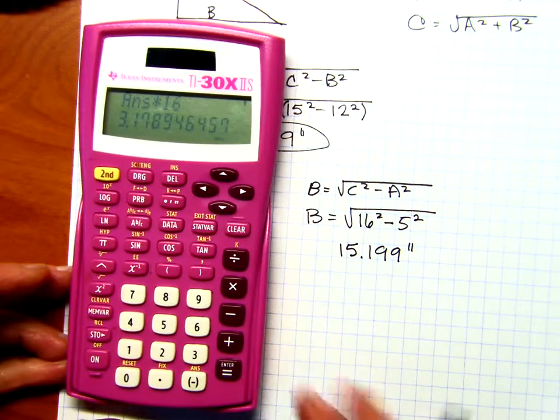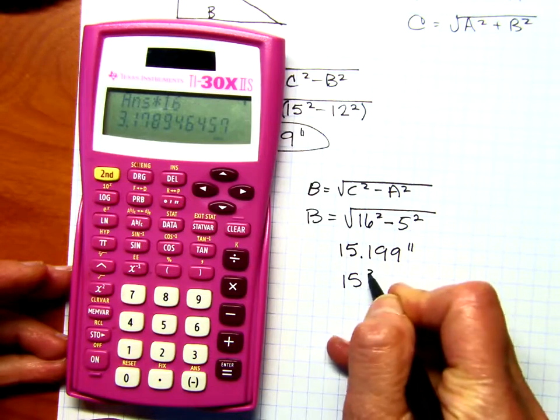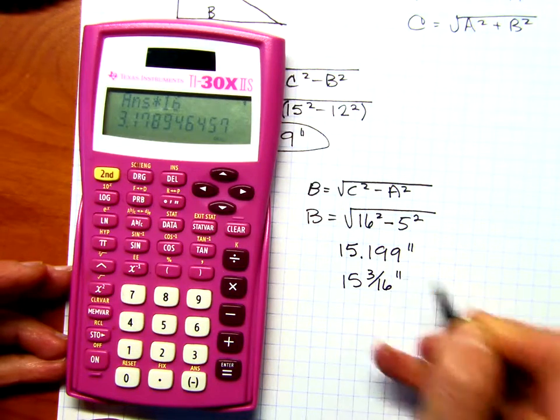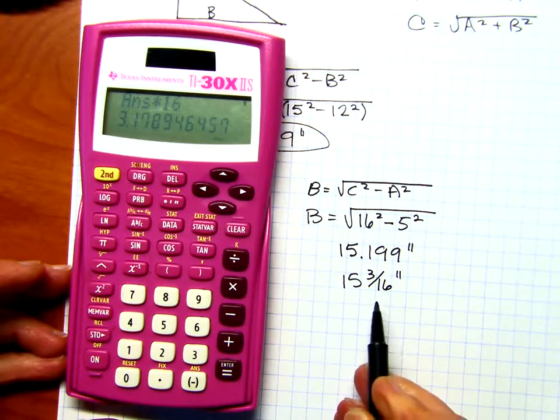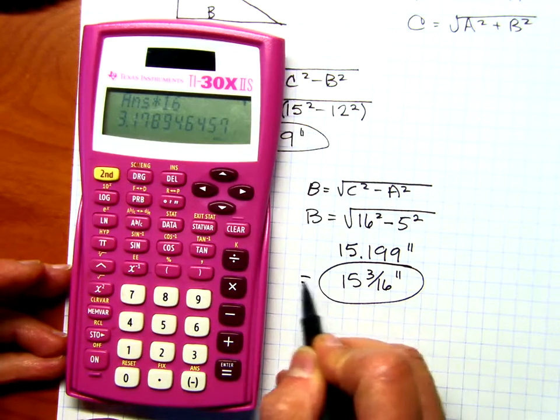So 3.1 is going to be 3 sixteenths. So this answer is going to be 15 and 3 sixteenths. I cannot reduce. If I could, I would go ahead and reduce, and then this would be my final answer.